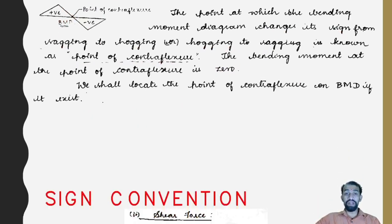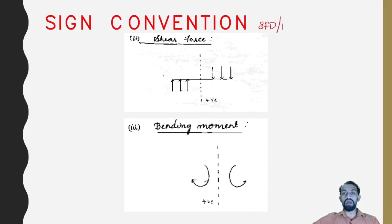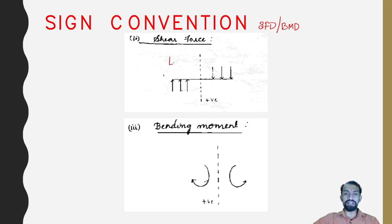Now comes the very important sign convention. These sign conventions must be remembered whenever we prepare a shear force diagram or a bending moment diagram. The beam is divided by a section line into a left-hand side and a right-hand side.